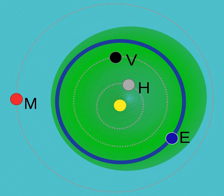The largest known Apollo asteroid is 1866 Sisyphus, with a diameter of about 8.5 km. Examples of known Apollo asteroids include many others catalogued within this group.